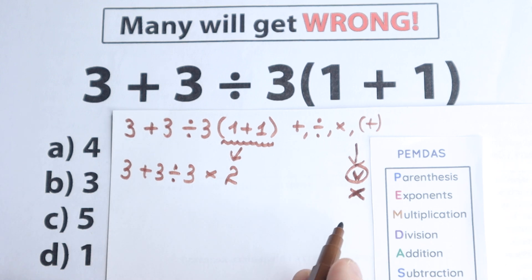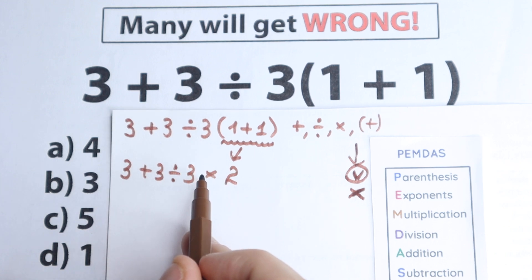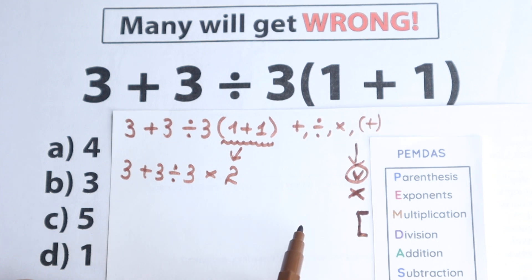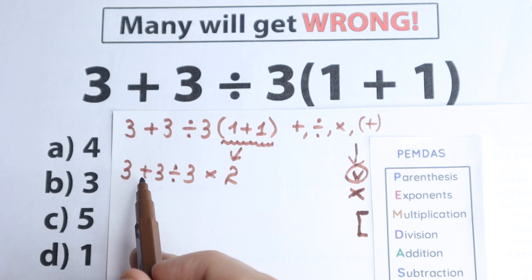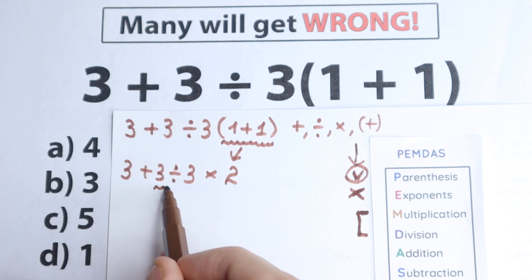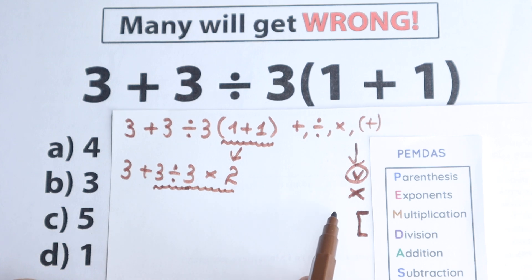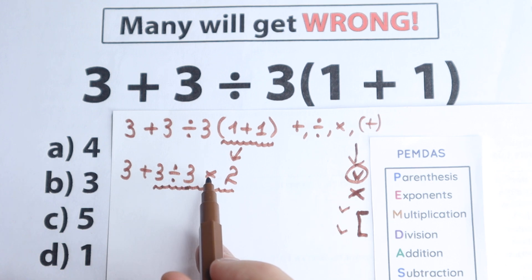The next step is multiplication. A lot of students make the common mistake of saying: okay, multiplication — we need to multiply first. But we need to look at multiplication and division as one common group and treat them together. Let's look at the expression — we have division here and multiplication here. So the main question is: what do we start with? Do we divide first, then multiply, or multiply first, then divide?